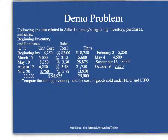Now let us look at a demonstration problem. The following data relates to Alder Company's beginning inventory and purchases. Here's the beginning inventory: 6,250 units at a unit cost of $3, for a total value of $18,750.